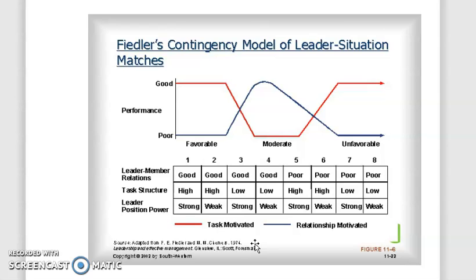Position power is determined by the degree to which the leader derives power from the position held in the organization. It enables the leader to influence the behavior of others. Whether the influence is strong or weak, a leader with considerable position power can more easily obtain better followers. Fiedler's contingency theory uses these three factors — leader-member relations, task structure, and position power — to analyze favorable and unfavorable conditions in situational leadership.